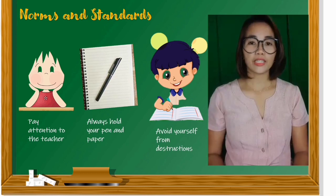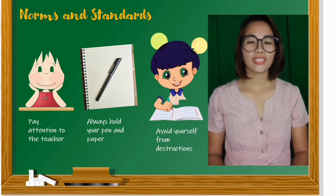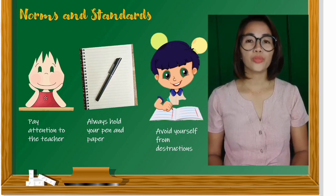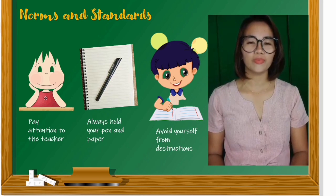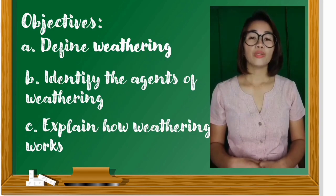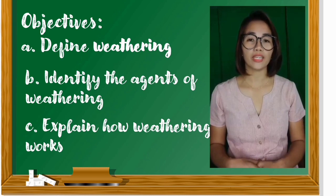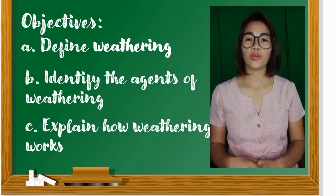There are three standards that you are going to follow. First, pay attention to the teacher as she discusses the lesson. Second, always hold your pen and paper for you to answer the questions and take down notes on important details in our lesson. Third, avoid distractions so that you can focus on what you are going to write. At the end of the day, you are expected to: A. Define weathering. B. Identify the agents of weathering. C. Explain how weathering works.